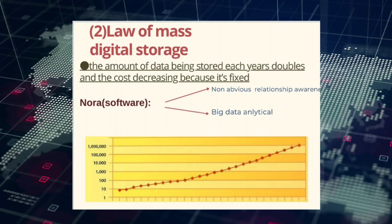Number two: mass digital storage. The amount of data being stored each year doubles and the cost is decreasing. This is related to NORA — Non-Obvious Relationship Awareness — and big data analytics.